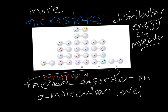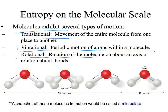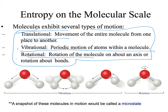Molecules can move in several different ways. They can move from one side of the room to the other — that's called translational. They can vibrate, and they can rotate. If they're a molecule, not a single atom, rotating changes their energy level. Those are different ways they can use their energy. The more ways they can distribute their energy and move around, the higher their entropy. If their ways of distributing energy are fewer, they will have lower entropy or lower thermal disorder.